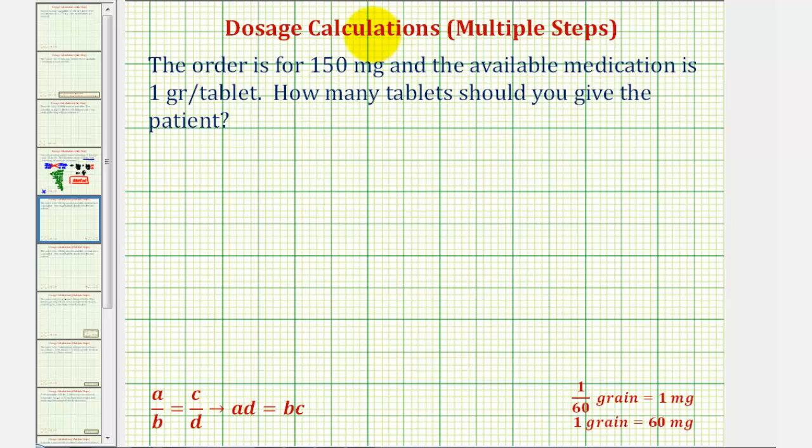We're going to solve this problem using proportions where we set two rates or ratios equal to each other as we see here. And then as long as the units of A and C are the same and the units of B and D are the same, we can cross multiply and solve for the unknown value. Notice here A times D is equal to B times C.